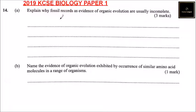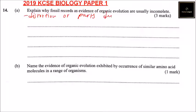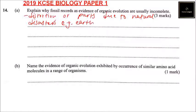One reason why fossil records are incomplete is distortion of paths due to natural disasters, e.g. volcanicity. So that is one reason why fossil records sometimes get lost.